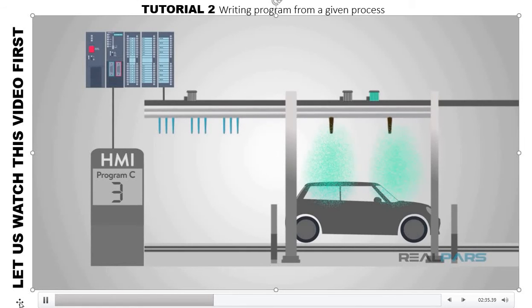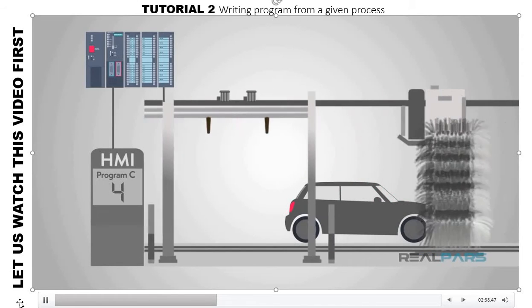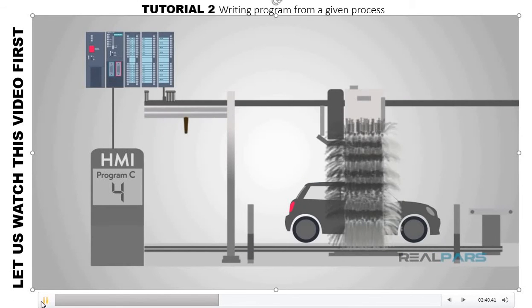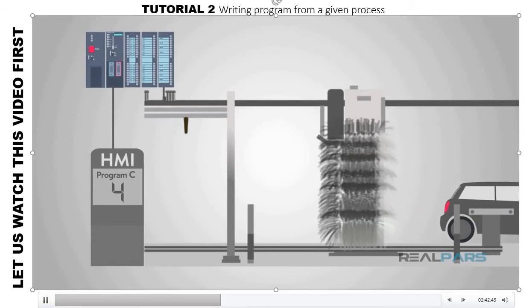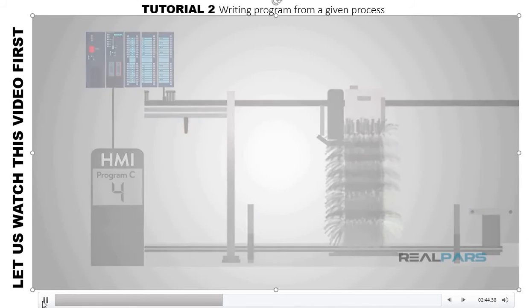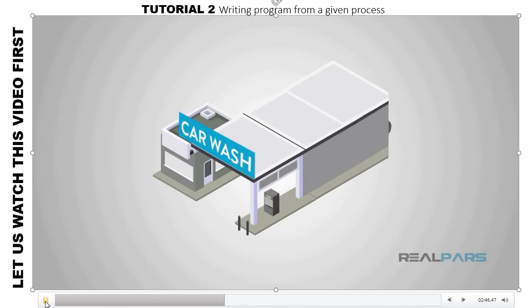The controller then runs through the rest of the cycle and wash that was selected in the beginning. Once all steps have been completed, the driver will be signaled to pull out of the wash.